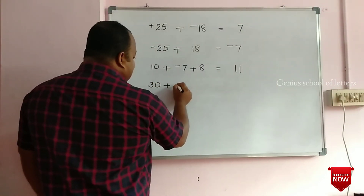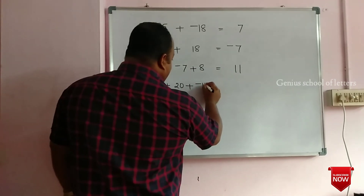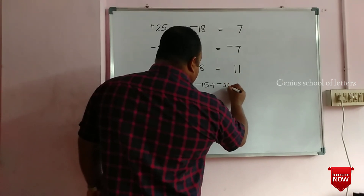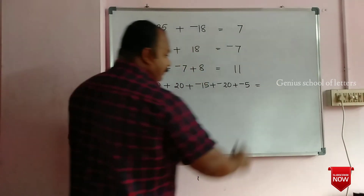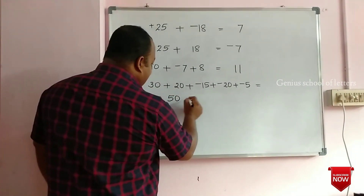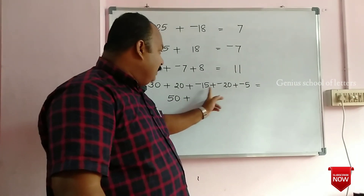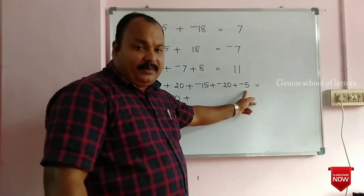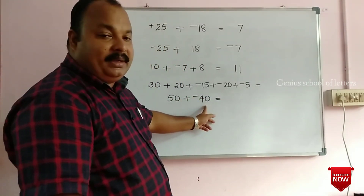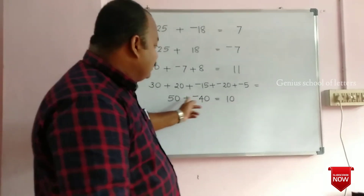30 plus 20 plus minus 15 plus minus 20 plus minus 5. 30 plus 20 is 50, that is positive. 15 plus 20 is 35, plus 5 is 40 — that is negative. 50 plus minus 40 is 10. Difference 10, positive number. The positive number is greater, so the answer is positive.